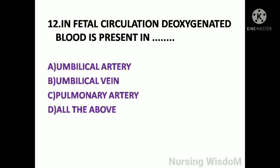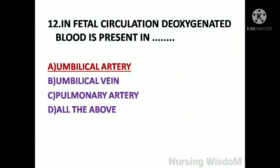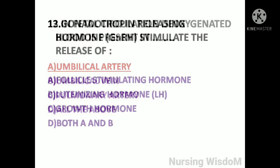Next question: In fetal circulation, the oxygenated blood is present in — option A: umbilical artery; option B: umbilical vein; option C: pulmonary artery; option D: all the above. The umbilical cord has three blood vessels: the largest is the umbilical vein, which transports blood with oxygen and nutrients into the fetus; the other two are the umbilical arteries, which branch off the iliac arteries and carry waste and CO2 blood back to the mother via the placenta. So here the answer is option B, umbilical vein.